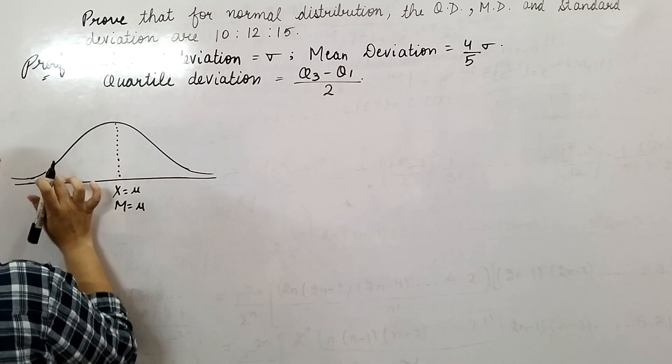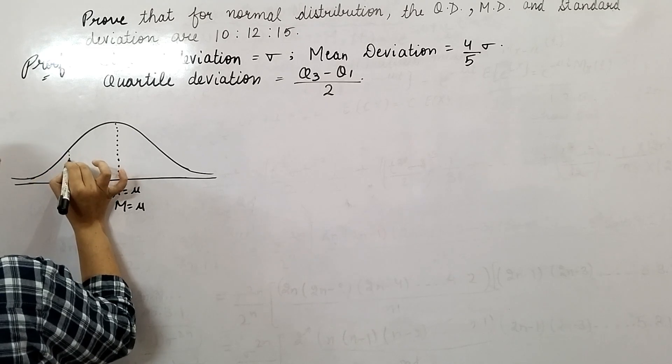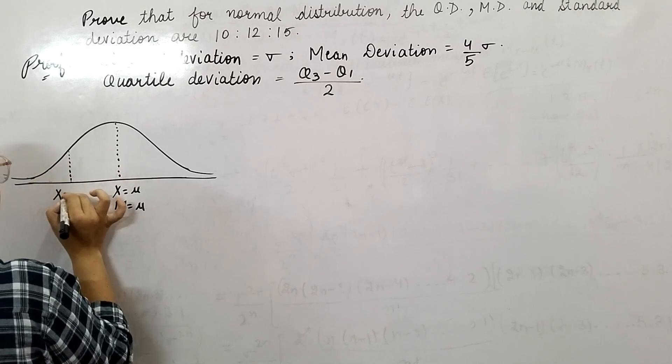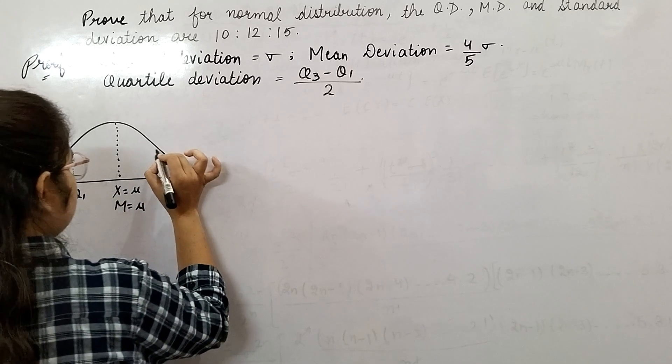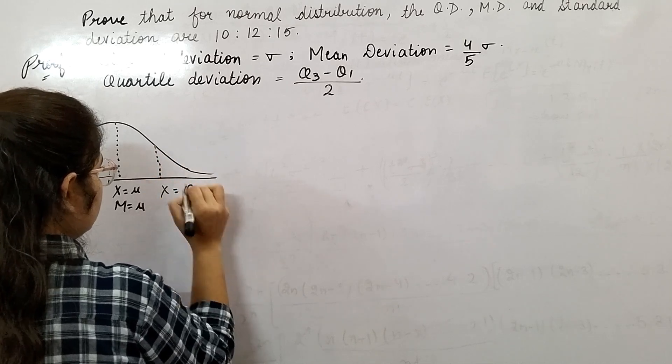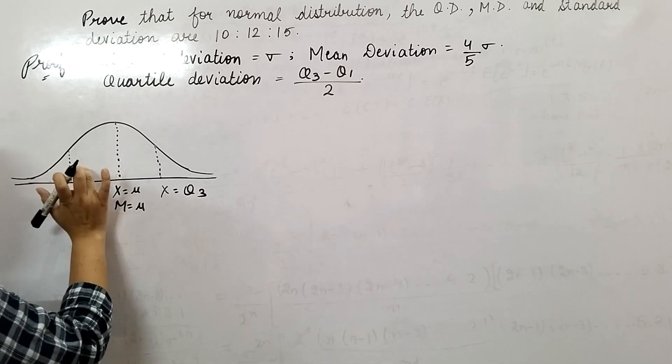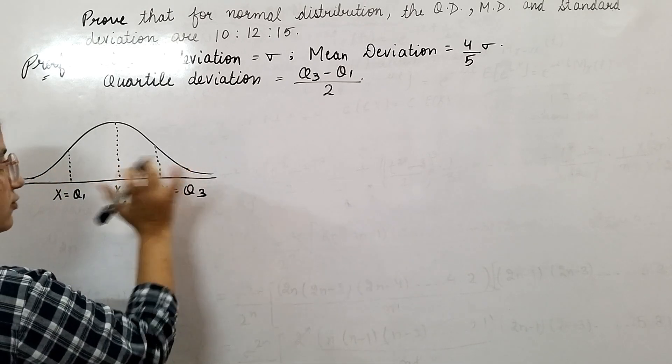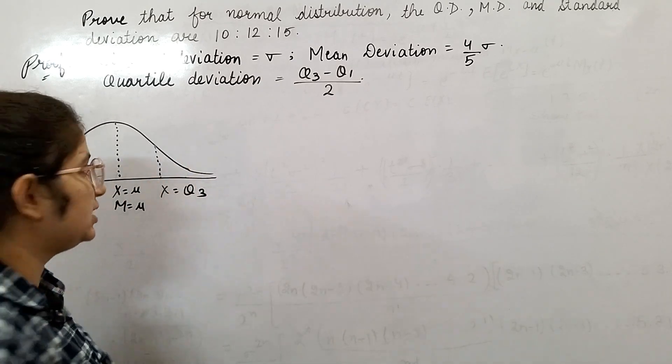This is your x equals mu, or you can say median equals mu. This portion is x equal to q1, and this portion is x equal to q3. The complete normal curve is divided into 4 equal parts: 1, 2, 3, and 4.